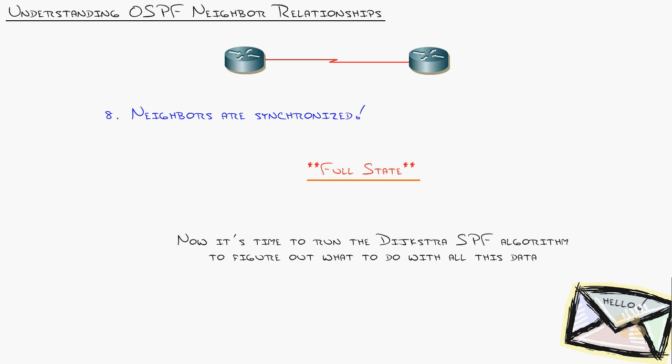Once routers reach the full synchronized state, they're considered full neighbors. That's what you want to see when you do show IP OSPF neighbor - all your neighbors listed with 'full' next to them, meaning there are no problems.